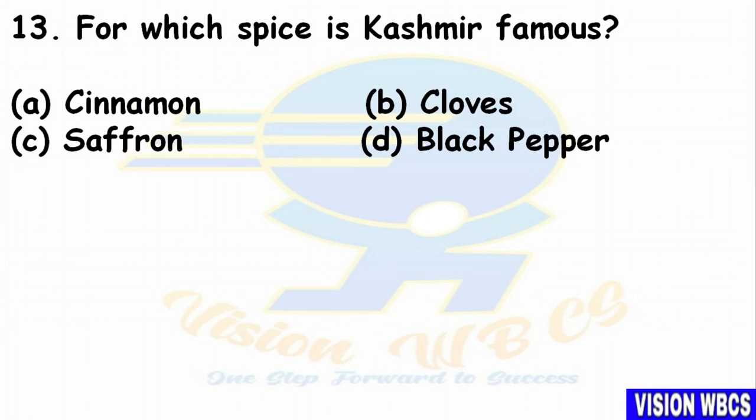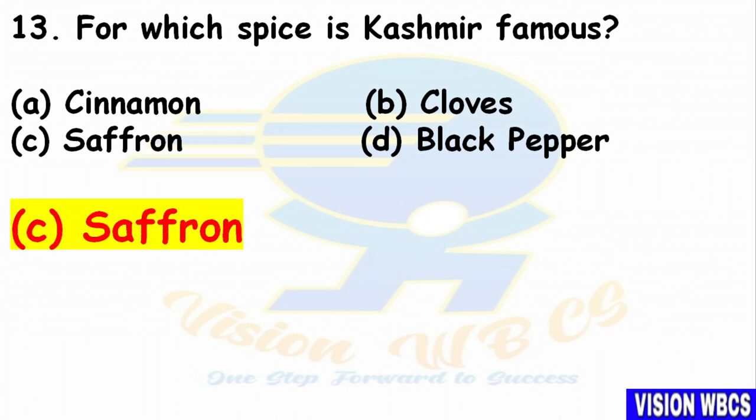Question 13: For which spice is Kashmir famous? Option A — Cinnamon. Option B — Cloves. Option C — Saffron. Option D — Black Pepper. The right answer is Option C: Saffron. Kashmir is most famous for Saffron, also known as Kesar.